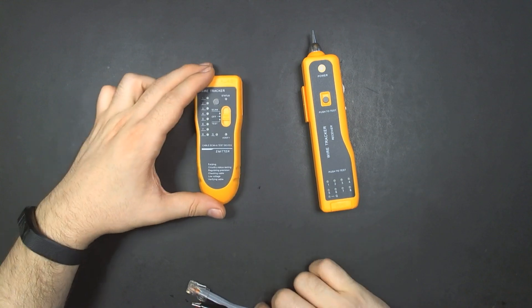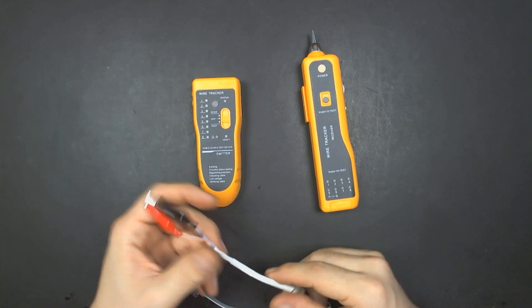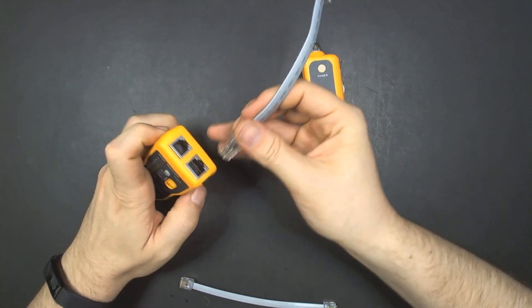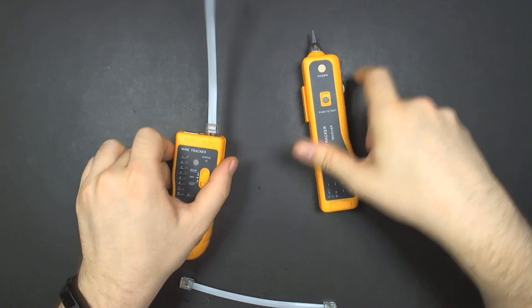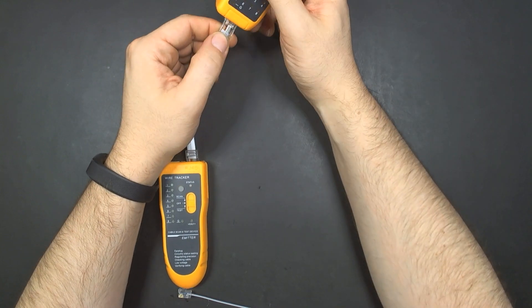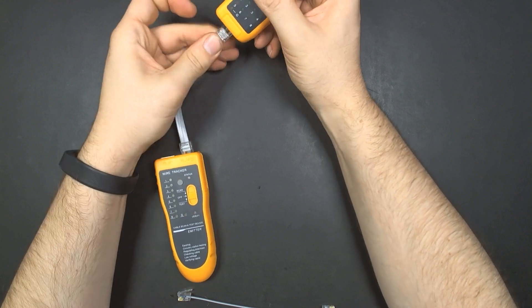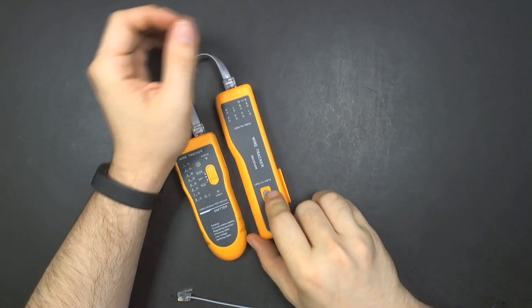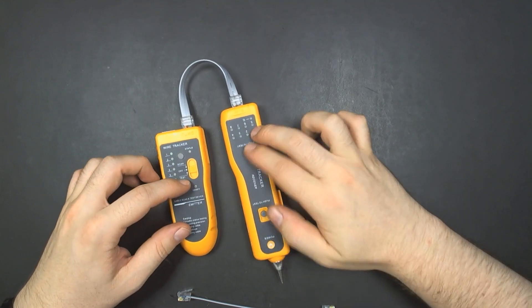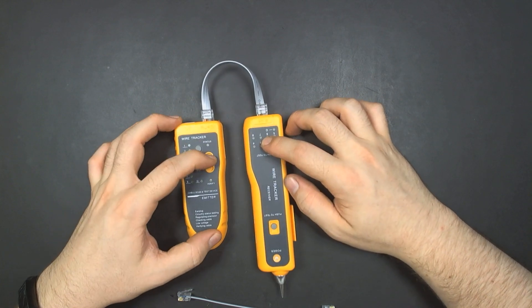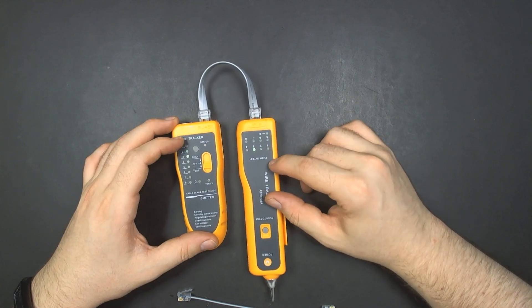The way this works is there are a few basic modes. You can test the pairs of cables. If I put in RJ45 here, this is the transmitter, and this is the receiver for the test mode. If I put it on test, it's going to go through and do each pair.